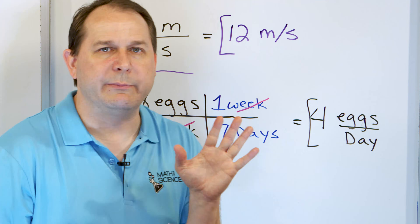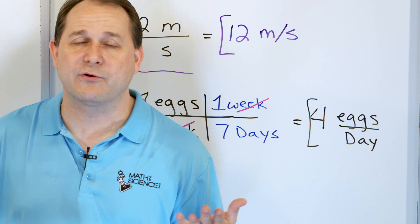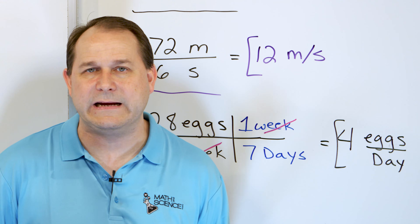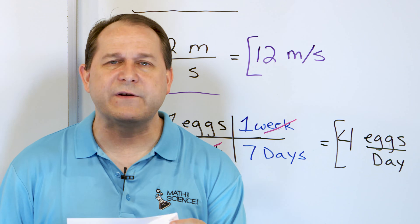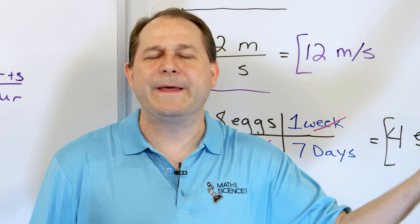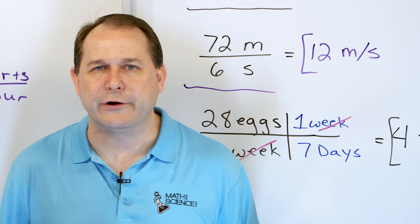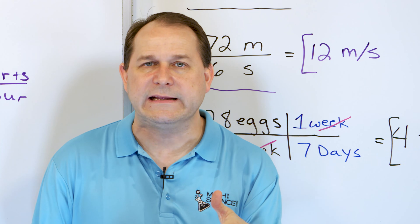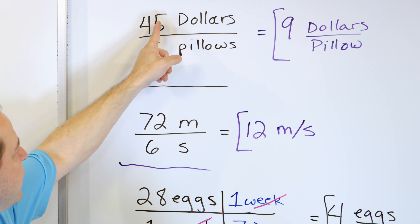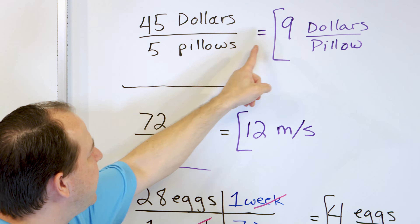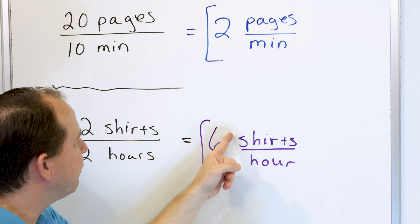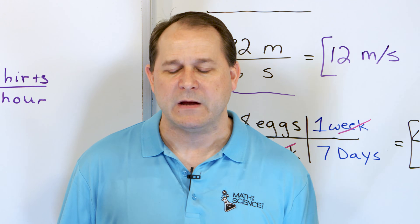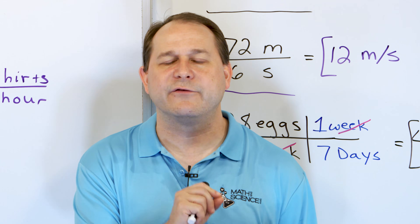This method of solving problems using units you will actually use forever. If you go into a branch of science or engineering, you will be doing problems years from now remembering these lessons — it is the most powerful technique I personally know for solving problems. We've conquered the idea of a unit rate: cost per pound, cost per gallon, distance per second, pages per minute. Anytime you divide two things like that, you get a unit rate. Follow me in Part 2 for more practice with unit rates in math.